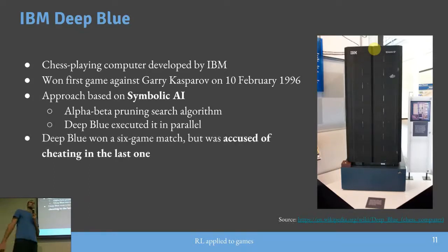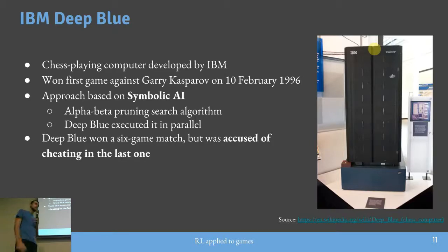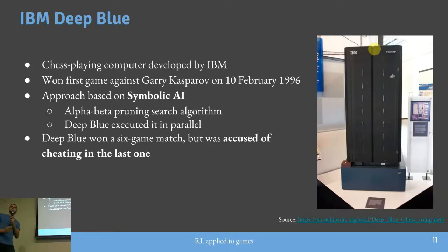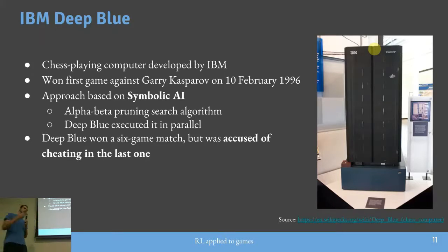O Deep Blue ganhou do Gary Kasparov, mas foi acusado de estar roubando em um dos jogos. No último jogo, análises disseram que aquele movimento seria impossível para o computador ter feito. O Kasparov pediu os logs para a IBM, que não disponibilizou. Ele pediu para estudar os jogos — a IBM não disponibilizou. Ele pediu mais uma partida — a IBM não quis. E o Deep Blue foi aposentado.